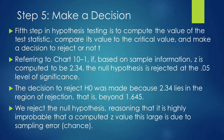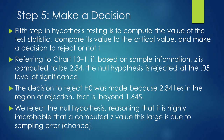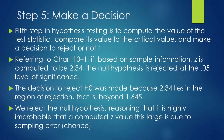Based on sample information, Z is computed to be 2.34. The null hypothesis is rejected at the 0.05 level of significance. The decision to reject H-naught was made because 2.34, our computed value, lies in the rejection region. Our critical value is 1.645, so our computed value falls in the rejection area. It is highly improbable that a computed Z value this large is due solely to sampling error, so we reject the null hypothesis.